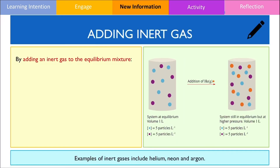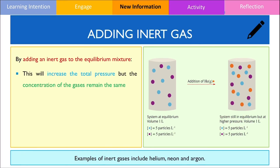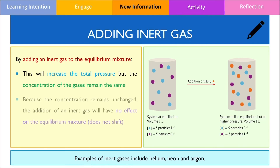To conclude this video, let's talk about the effects of adding an inert gas on the equilibrium mixture. Since we are introducing another gaseous species — in this case helium — into the reaction vessel at a fixed volume, this increases the total number of collisions. However, because this does not change the concentration of the reactants or products, adding an inert gas has no effect on the equilibrium mixture, meaning there is no net reaction and the value of the equilibrium constant remains unchanged.